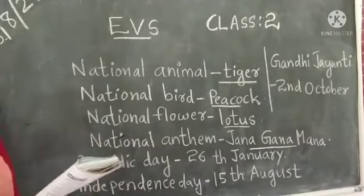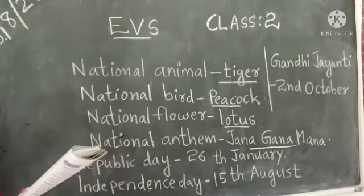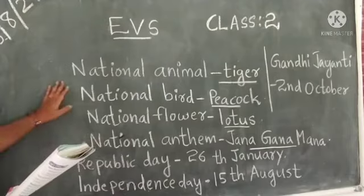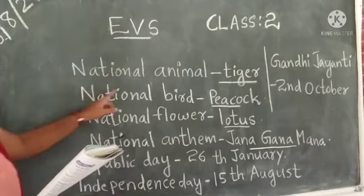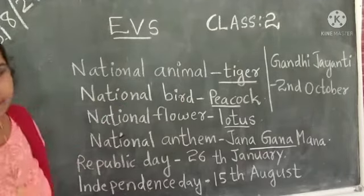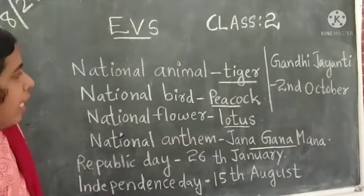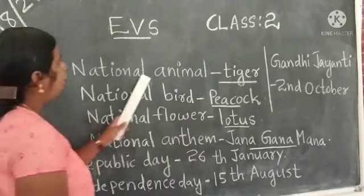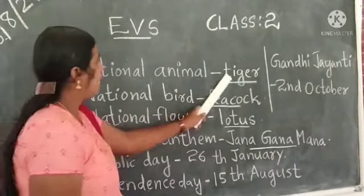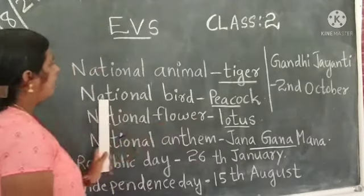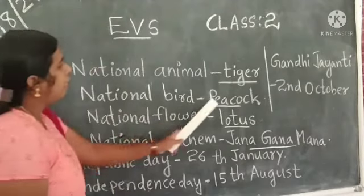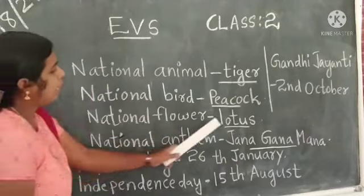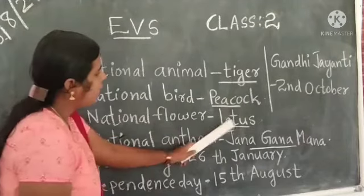So these are the national symbols of India. The national animal of India is tiger. The national bird is peacock. The national flower is lotus.